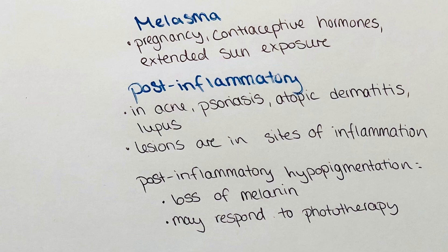In post-inflammatory hypopigmentation, the melanocytes are damaged or destroyed and are non-functional, so they cannot produce melanin. It is often more prominent in naturally darker skin tones and can occur with any skin injury, whether burns, surgery, acne or dermatitis. Creams with a high content of benzoyl peroxide can also lighten the skin, so it can be helpful to stop those creams if a patient experiences local hypopigmentation. In less severe cases, the skin will restore its natural pigmentation by itself.